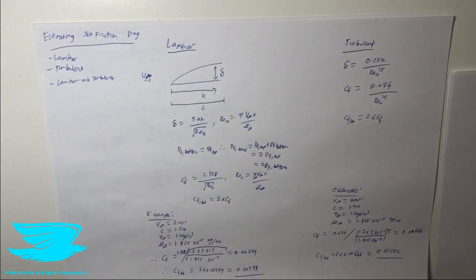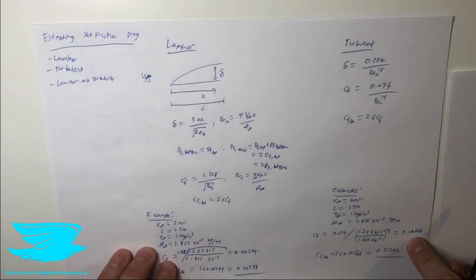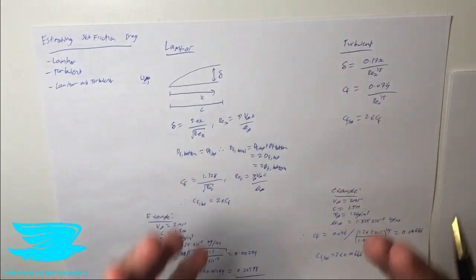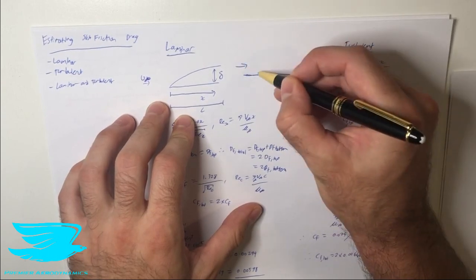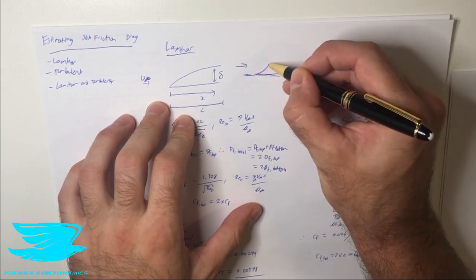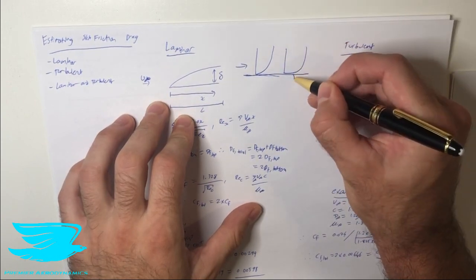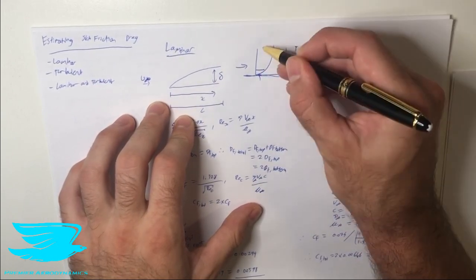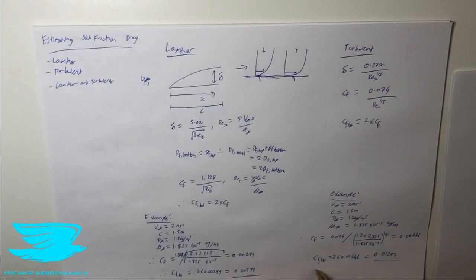This tells us that the skin friction drag over a flat plate with a turbulent boundary layer is significantly more than over a laminar boundary layer. This is because the turbulent boundary layer velocity profile near the wall is much greater than the laminar profile — the flow close to the wall moves faster in the turbulent case, resulting in much higher shear stresses and skin friction drag. Multiplying by 2, the total turbulent skin friction drag coefficient is 0.01292.